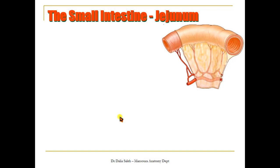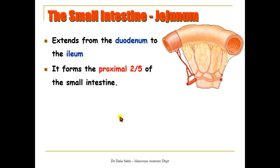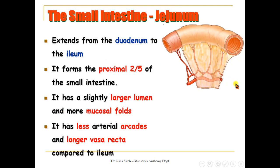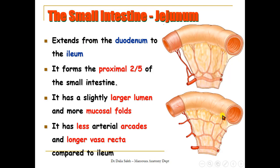The next part of the small intestine is the jejunum, which extends from the duodenum to the beginning of the ileum and forms about the proximal two-thirds of the small intestine. It has a slightly larger lumen than the ileum and more mucosal folds. Its arterial supply forms fewer branching arcades and longer vasa recta compared to the ileum, which has a narrower lumen, fewer mucosal folds, more arterial arcades, and shorter vasa recta.